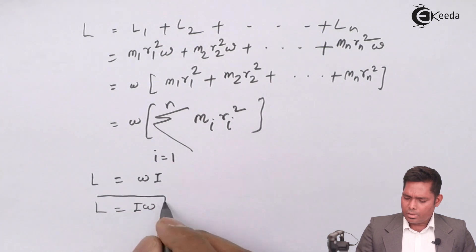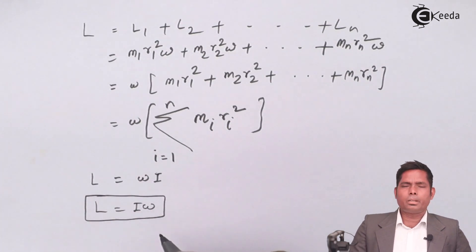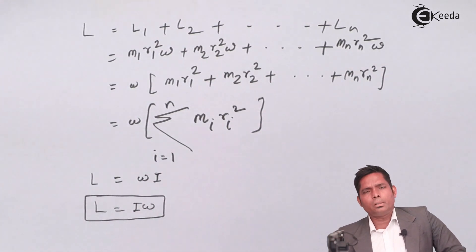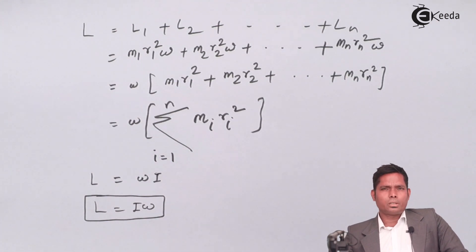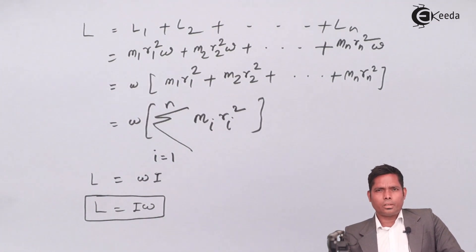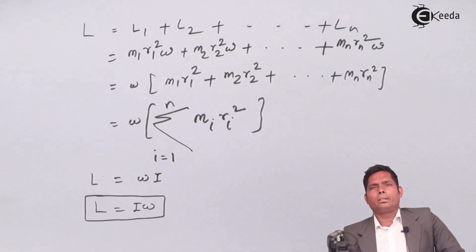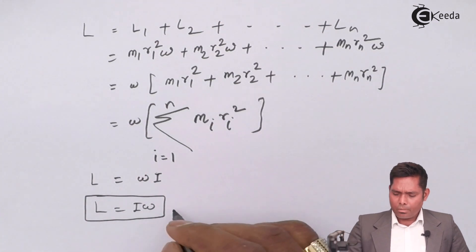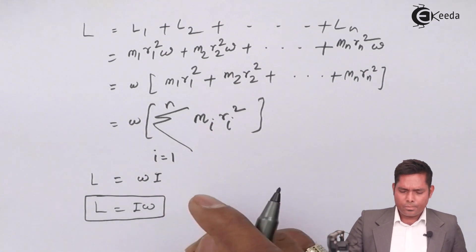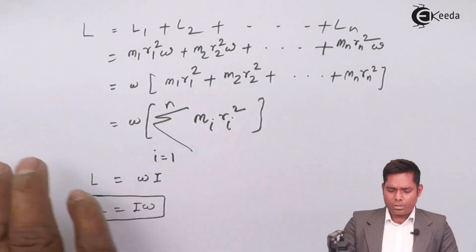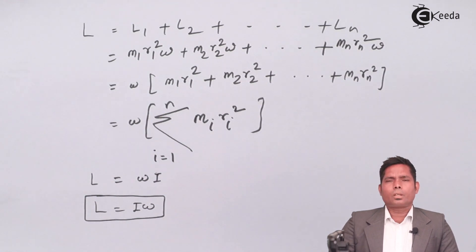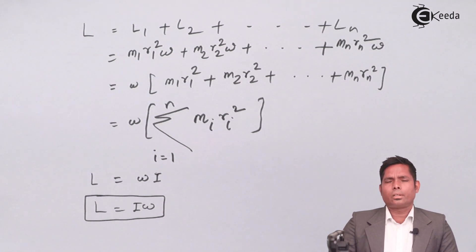This is the final expression for angular momentum of a rigid body in pure rotation. The body is rotating only with no translational motion, and the angular momentum comes out to be L equals I omega. Thank you.